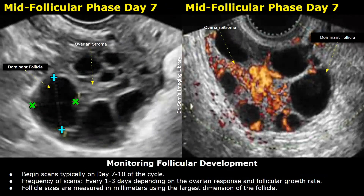Now we move on to day seven of the menstrual cycle. Days one to five are part of the early follicular phase, and days six to ten are part of the mid follicular phase. These images are obtained on day seven, which is a preferred day for follicular monitoring. The frequency of scans is every one to three days, depending on the ovarian response and follicular growth rate.